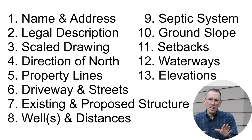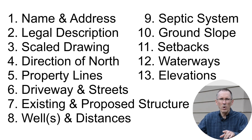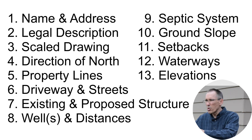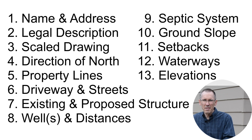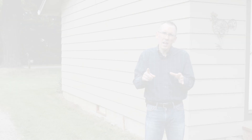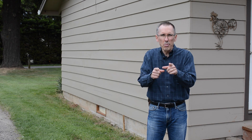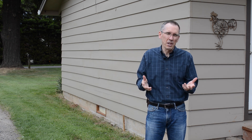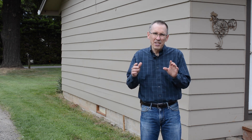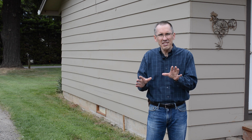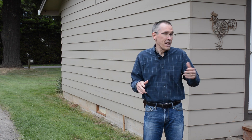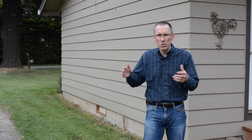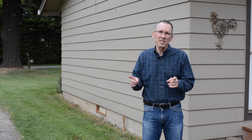And number thirteen, relative elevations at the building site as well as at the lot corners of the building site. So depending on where your property is located, your building authority may require more or even less information than what I just listed. Additional information may include landscape features, sidewalks and other walkways, utility services including electrical service lines, water service lines, etc.